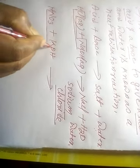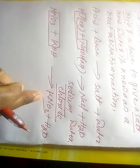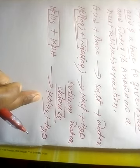Next example: HNO₃ plus KOH. HNO₃ reacts with KOH to give KNO₃ plus H₂O. The salt formed is potassium nitrate.